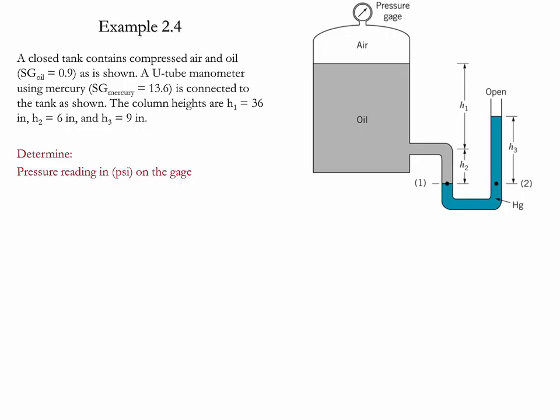The specific gravity of oil is equal to 0.9 and the specific gravity of mercury is equal to 13.6. We need to determine the pressure reading in the gauge in psi.